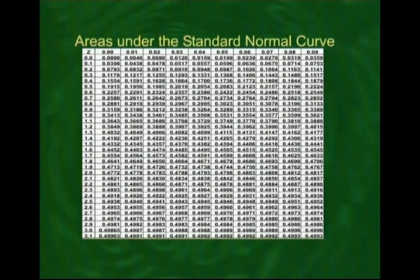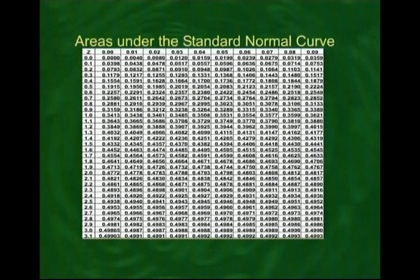Based on past records, if we draw the histogram of the dishwasher lifetimes, we find it is approximately normally distributed — few dishwashers have very short lives, few have very long lives, and most cluster around 3 to 4 years. The problem is: the factory gives a guarantee of 12 months, and we want to find what fraction of dishwashers will have to be replaced for free — i.e., the probability that a dishwasher fails before 12 months (1 year).